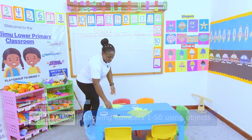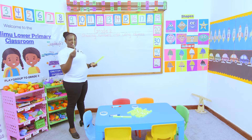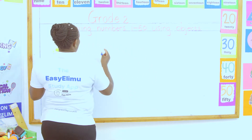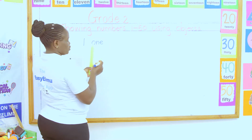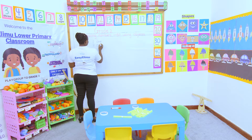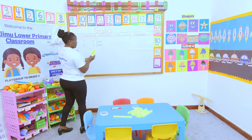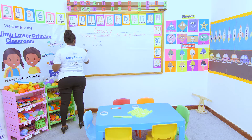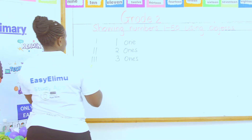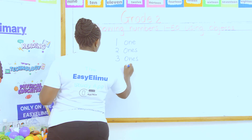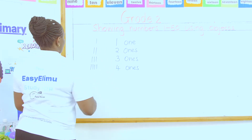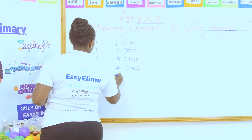Do you remember what we did when we were doing the tens and the ones? When I take one straw like this, this is one — one straw. When there are two, they are two ones. When there are three, they are three ones. When they are four, they are four ones. When they are five, they are five ones.